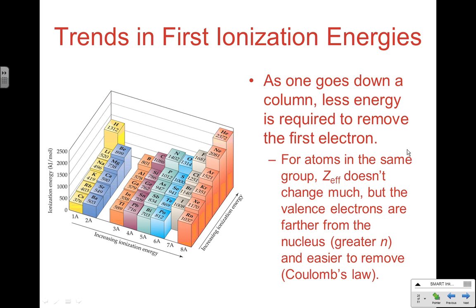Trends in first ionization energy: as one goes down a column, less energy is required to remove an electron. Think about what has been the case every single time we've talked about a group trend. For atoms in the same group, the effective nuclear strength doesn't really change all that much, but the valence electrons are farther from the nucleus, and distance kills attractive forces. Just like every group trend, we're talking about a greater n — the farther you are from the nucleus, the easier it is to remove an electron by Coulomb's law.